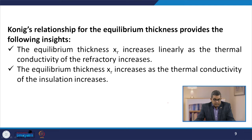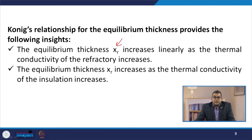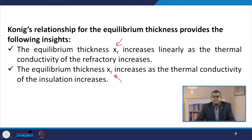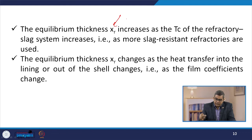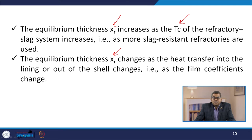Koenig's relationship for equilibrium thickness provides different insights. First, the equilibrium thickness xr increases linearly as the thermal conductivity of the refractory increases. Second, xr increases as the thermal conductivity of the insulation increases. Third, xr increases as the tc of the refractory-slag system increases — that is, as more slag-resistant refractories are used. Also, xr changes as heat transfer into the lining or out of the shell changes, i.e., as the film coefficient changes.